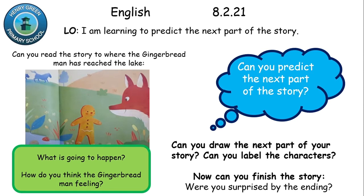I'm going to show you an example of what I think is going to happen next, and I'm going to be using full sentences. I think the gingerbread man is feeling worried and scared because he does not know how to swim through the lake, and I think the fox is going to be very kind and help him swim through the lake. Did you see how I used 'because' in my full sentences?